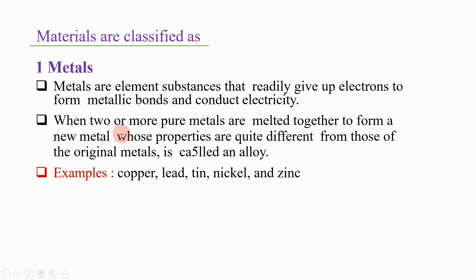When two or more pure metals are melted together to form a new metal whose properties are quite different from those of the original metals, it is called an alloy. This clarifies both what a metal is and what an alloy is.